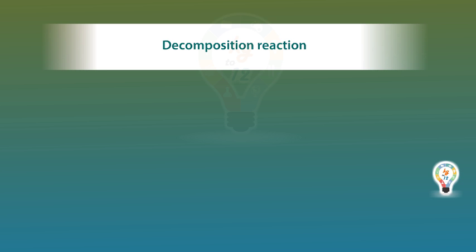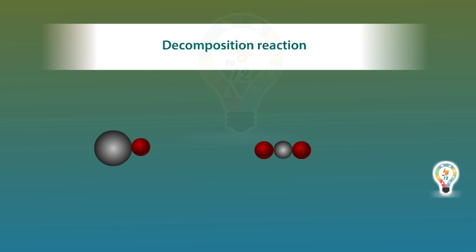Decomposition Reaction: In this reaction, a single chemical compound may decompose into two or more new substances. For example, when calcium carbonate is heated, it decomposes into calcium oxide and carbon dioxide.